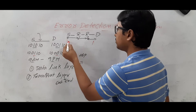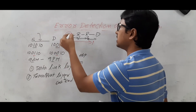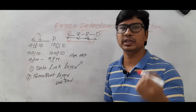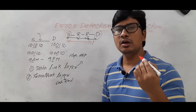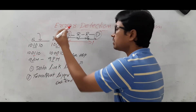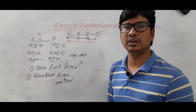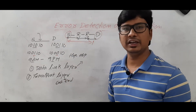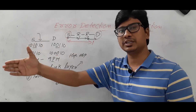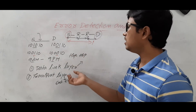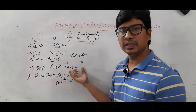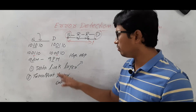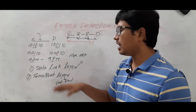The transport layer checks end-to-end communication — whether whatever the source has sent, the destination has received successfully. The transport layer uses a port number, which is a 16-bit service point address, to verify source-to-destination delivery. If all hop-to-hop steps are correct, then end-to-end communication will also work — just like if all steps in an algorithm are correct, the algorithm will be correct. Both the data link layer and transport layer perform error control.